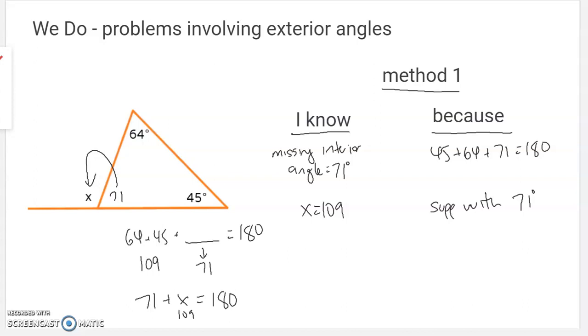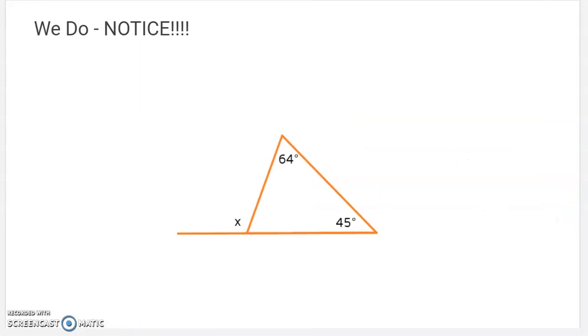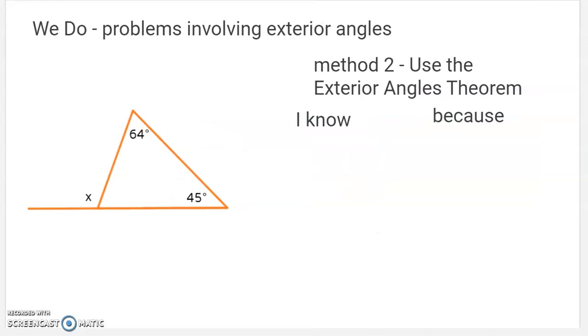But notice what happened here. On the inside of the triangle, we had 109 and 71. And then when we found this exterior angle, we also had 109 and 71. So notice, when we finish this, go to your next example, where it says notice that this ended up being 109 degrees. And these two also added up to 109 degrees. It works out the same way, right? 109 plus this equals 180. And this plus that equals 180. You end up with the same thing. It's like solving the same problem for two different reasons. So those equal 109, and that equals 109, which brings us to a last thing we can do.